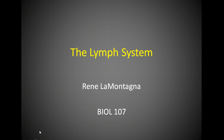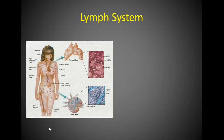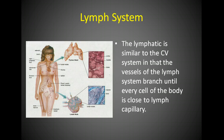The lymph system is going to tie in the cardiovascular system with the immune system — it ties those two areas together. The lymphatic system is similar to the cardiovascular system in that the vessels of the lymph system branch off and go close to every cell in the body, similar to capillaries. There are things called lymph capillaries that sit close to the regular capillaries from the cardiovascular system.